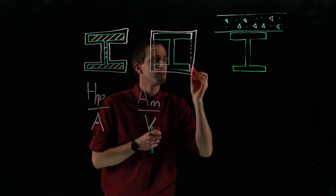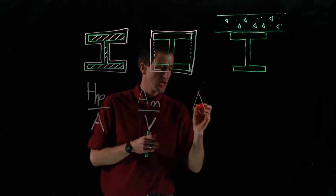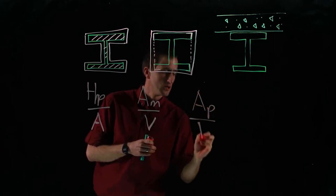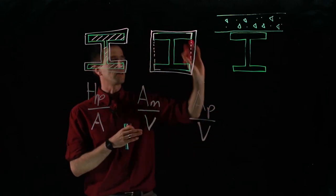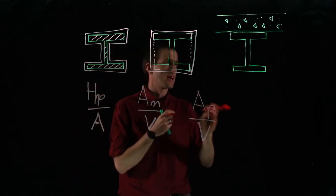This would then be the heated perimeter now, but we often then will refer to this as a protected area over volume, and that will give us then the new Hp over Am, or the different factors we would use.